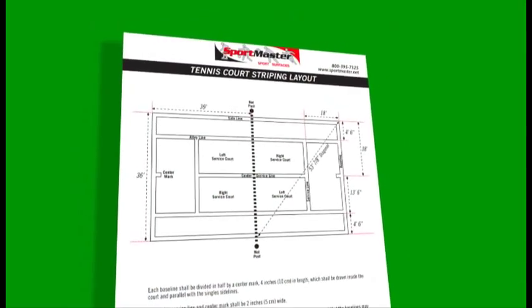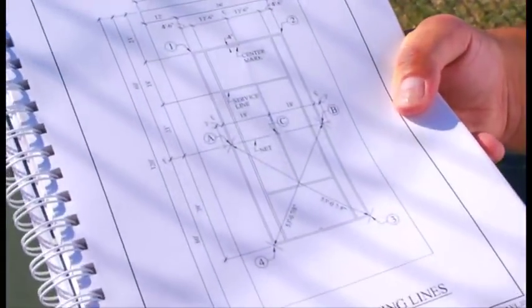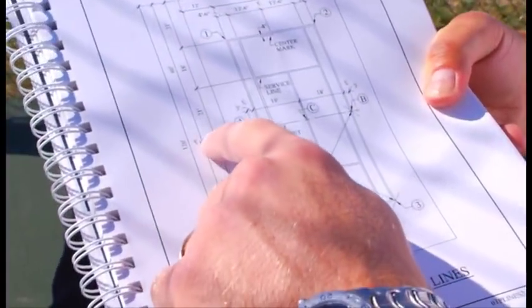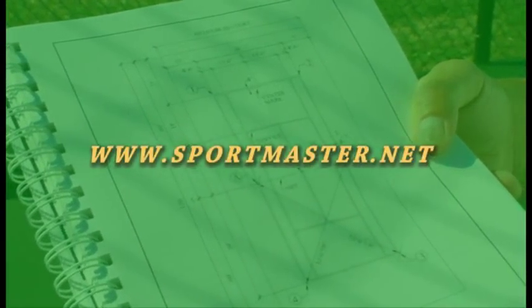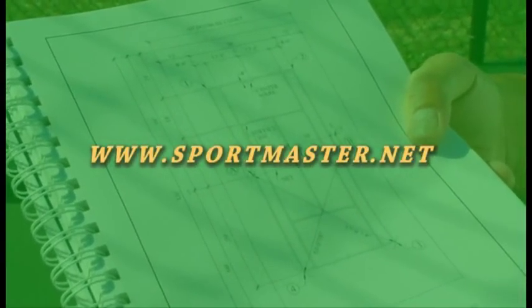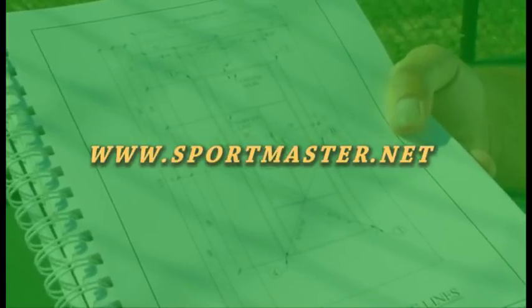Refer to our tennis court diagram for further information. Now that we have the main playing area, we can start to lay out the tennis court lines. Please visit sportmaster.net and locate our diagram section for a complete copy of the tennis court striping layout measurements.